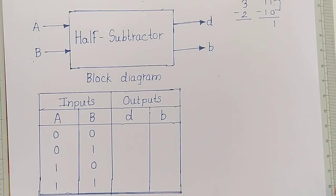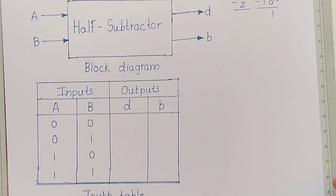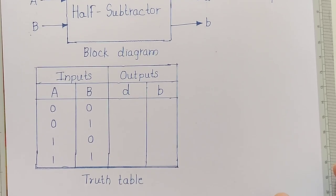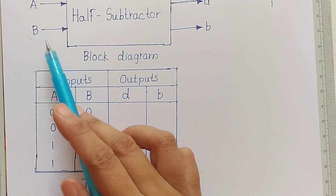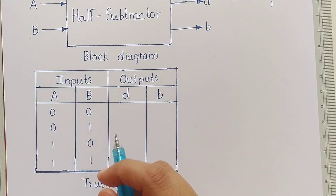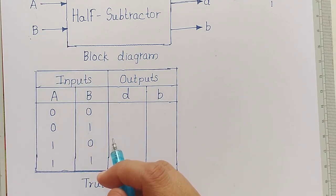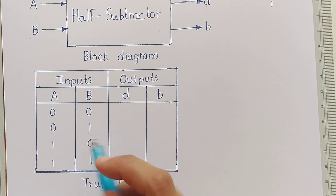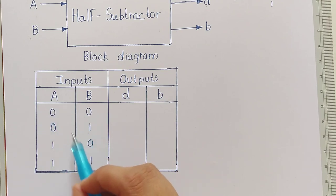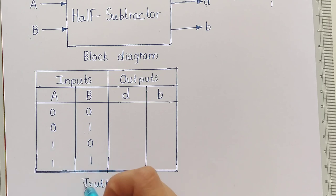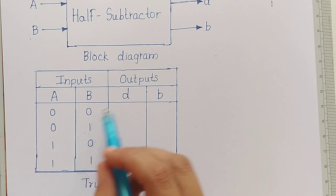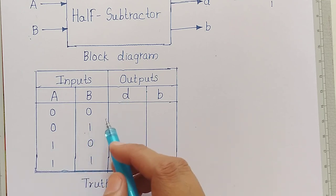We will understand the working of the half subtractor by deriving its truth table. From the block diagram, it has two input bits, so two raised to the power two gives four possible input combinations. We have already written these as: 00, 01, 10, and 11.